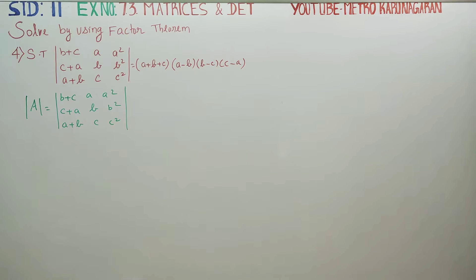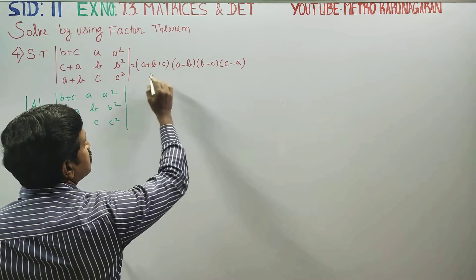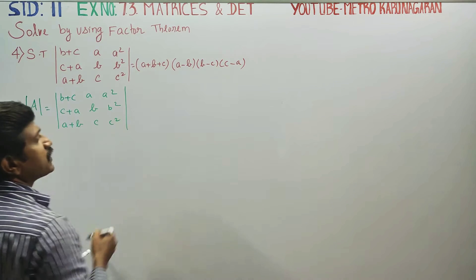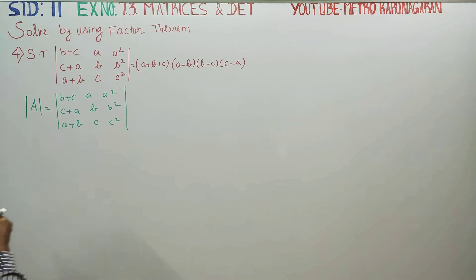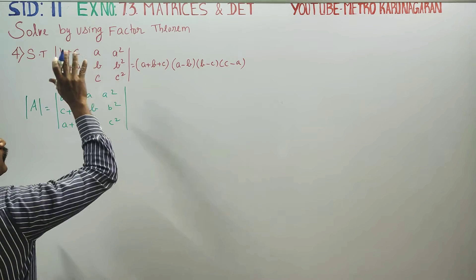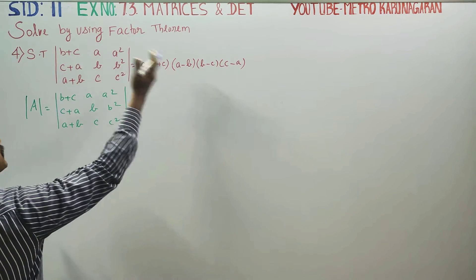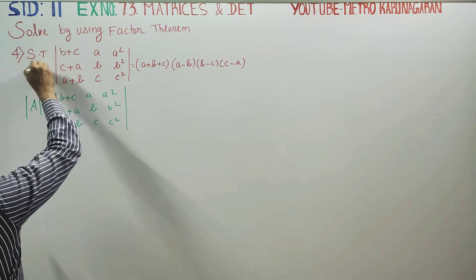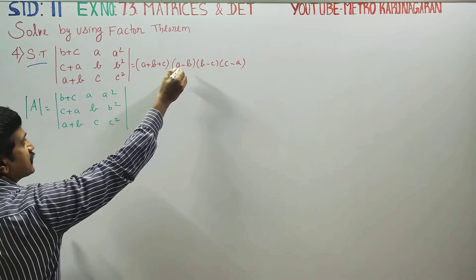First, we have to get the answer. We have to show the result is (a+b+c)(a−b)(b−c)(c−a). This is a factor. If we get the answer, we will prove it. That's why we have to identify the factors.